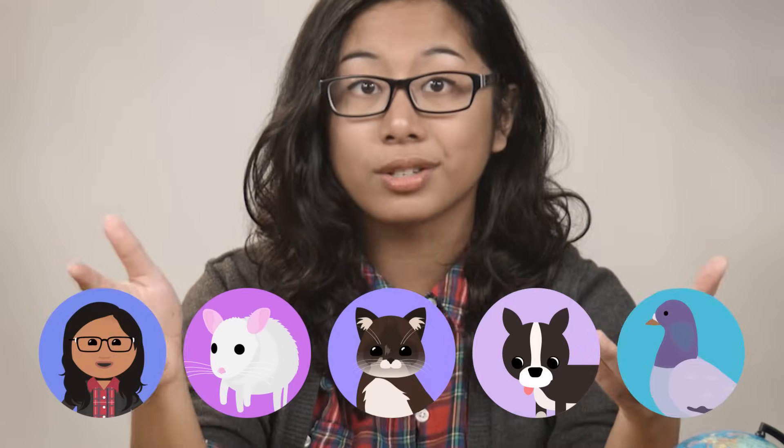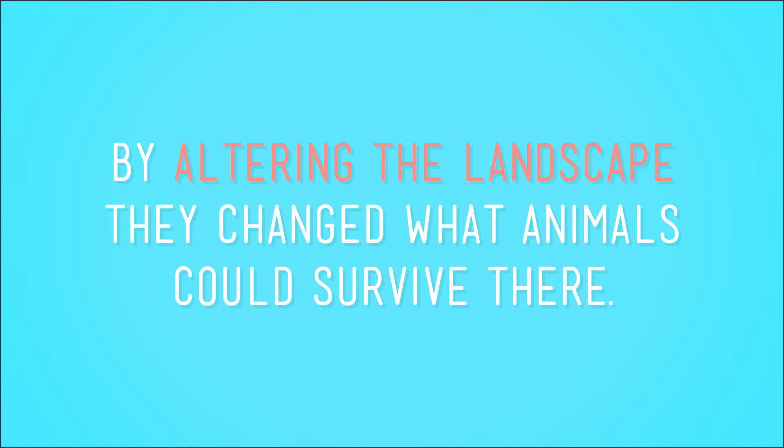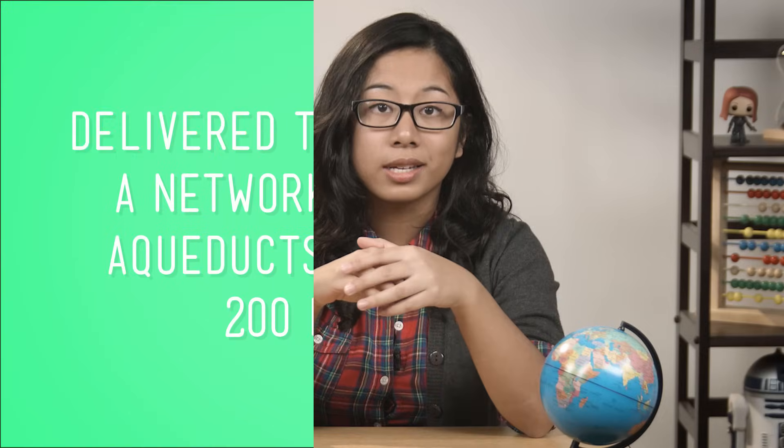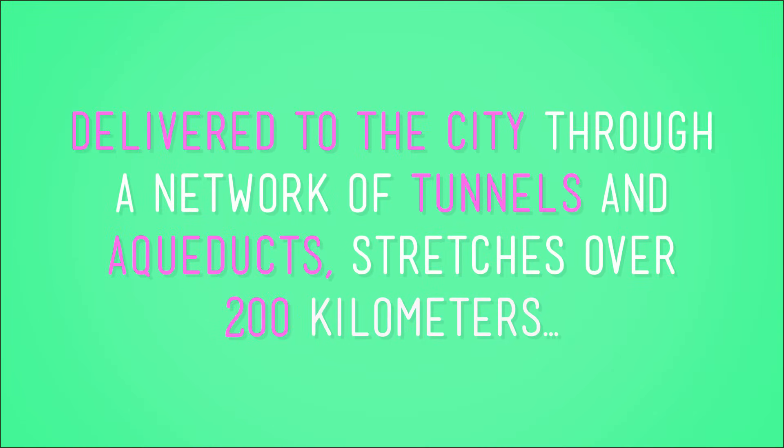Once a habitat for beavers, elk, turkeys, and black bears has become home to people, rats, cats, dogs, and pigeons. People didn't just change the landscape — by altering the landscape, they changed what animals could survive there. More than 160 kilometers of streams once flowed through Manhattan. Today, New York City's water supply system, delivered to the city through a network of tunnels and aqueducts, stretches over 200 kilometers, delivering more than three and a half billion liters of drinking water every single day.